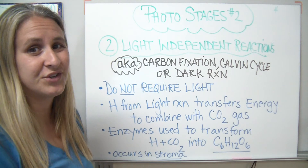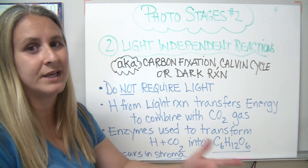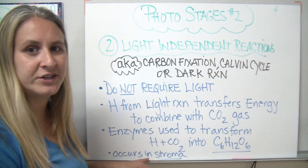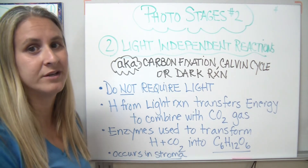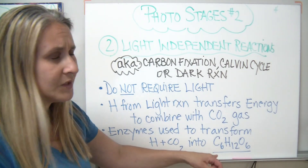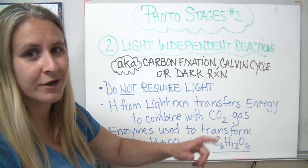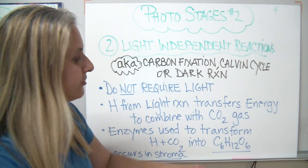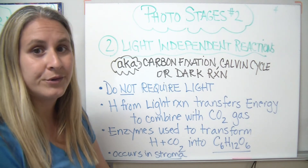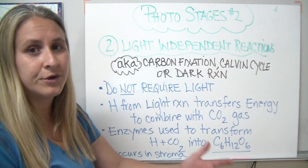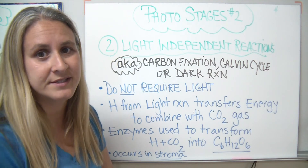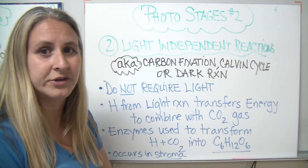The dark reactions were originally called that because they thought they only happened in the dark — it's just that they don't require light. The light-independent reactions occur in the stroma, which is the liquid portion of the chloroplast. Carbon dioxide gas comes in from the environment through the stomates on the underside of the leaf, and we combine it with the hydrogens from the first reaction to make our glucose molecule. Glucose can be used during cellular respiration to make ATP, to make other carbohydrates the plant needs, or stored in the plant as starch if it has extra.